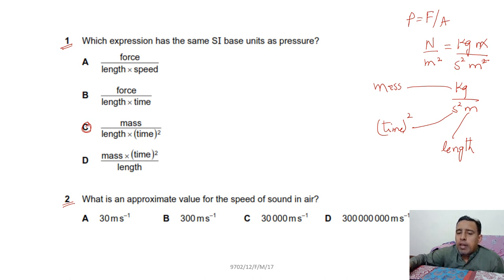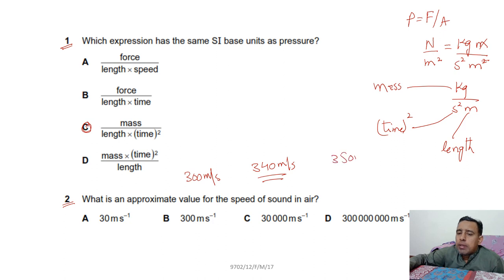Question 2: you have to find the approximate value of the speed of sound in air. The speed of sound in air is 340 m/s, and it varies from 300 m/s to 350 m/s. Option B is correct.